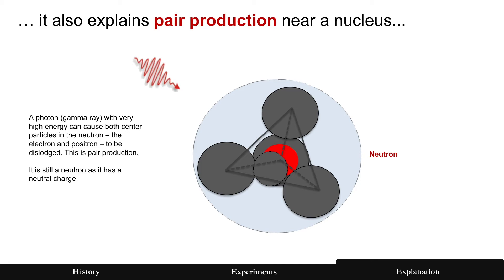And it also explains the pair production process. Remember, this is a high-energy photon, a gamma ray, striking somewhere near the nucleus. It's probably hitting the neutron, and it ejects both of those particles. It has enough energy to eject both the positron and the electron.